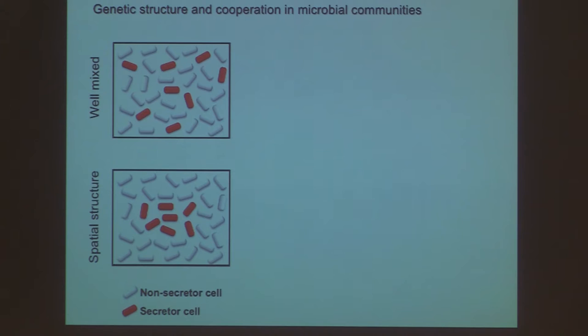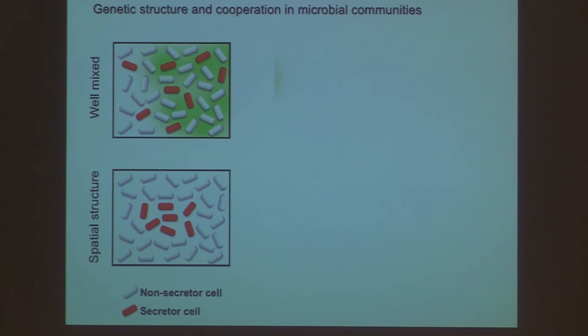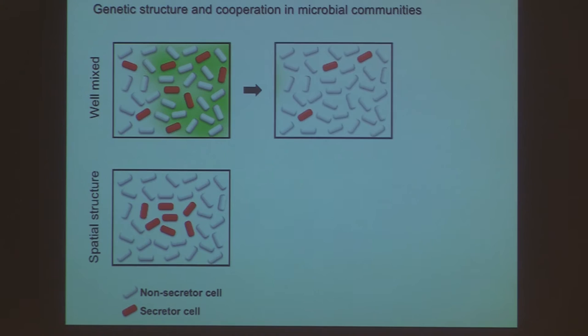We have a secretor cell — red — that releases an enzyme helping everyone around it to grow by breaking down a complex molecule into monomers fed to all cells around it. But it pays a cost to make this enzyme. We put that cell together with another genotype that doesn't do this and grows a bit faster by saving that energy. In a well-mixed case, the red cell makes the enzyme, it helps everyone around, but only the red cell pays the cost. Over time, the red guys are being out-competed. This is the classic problem of cooperation: if individuals pay the cost and the group benefits, why would the individual bother?